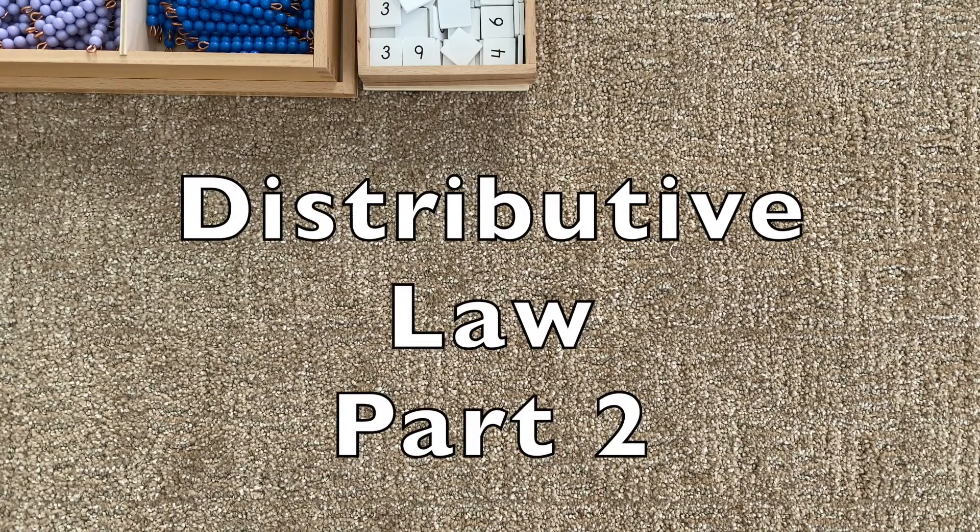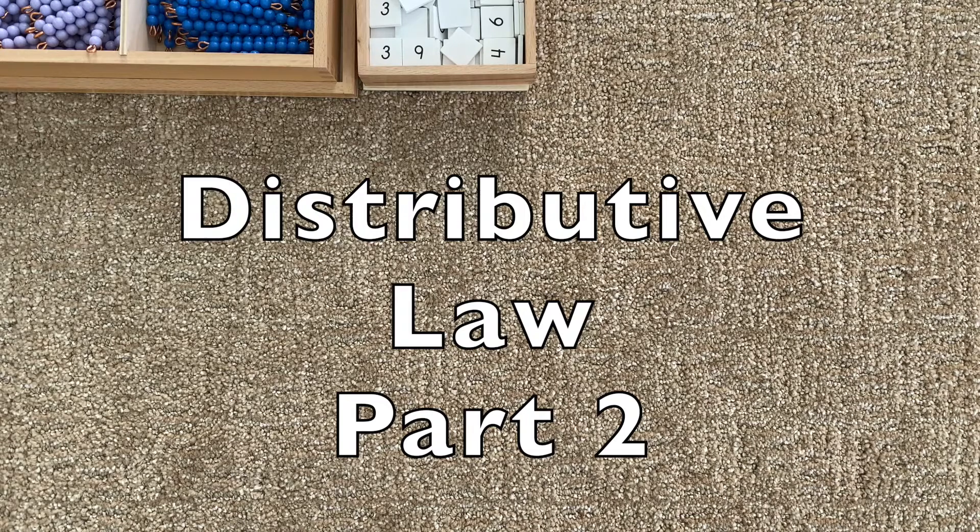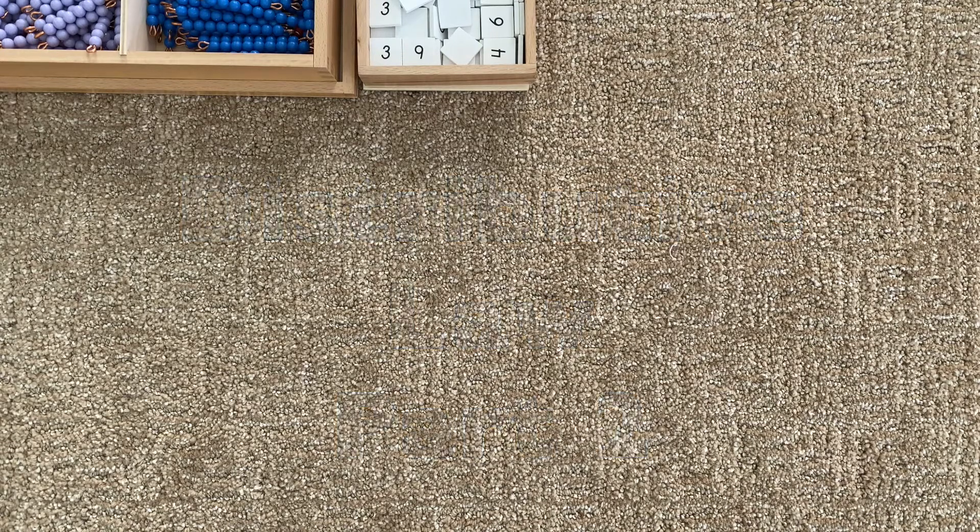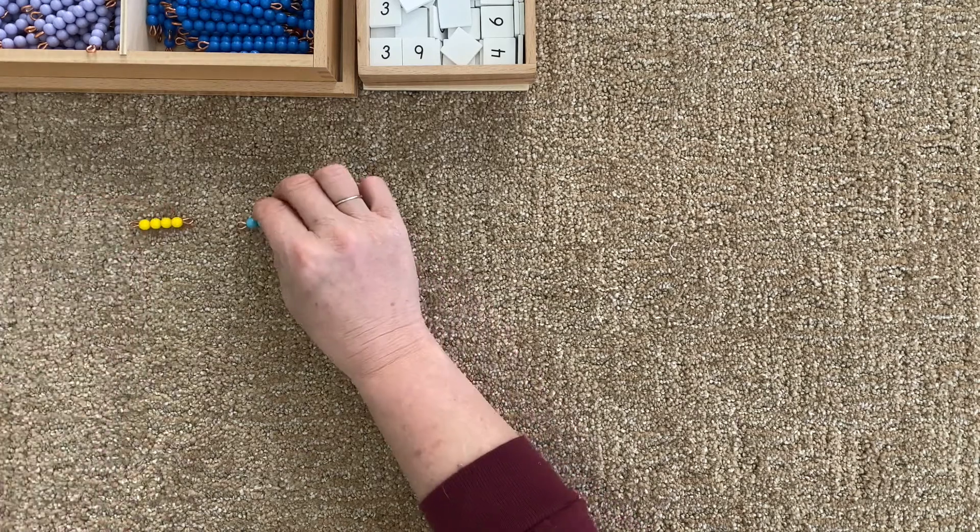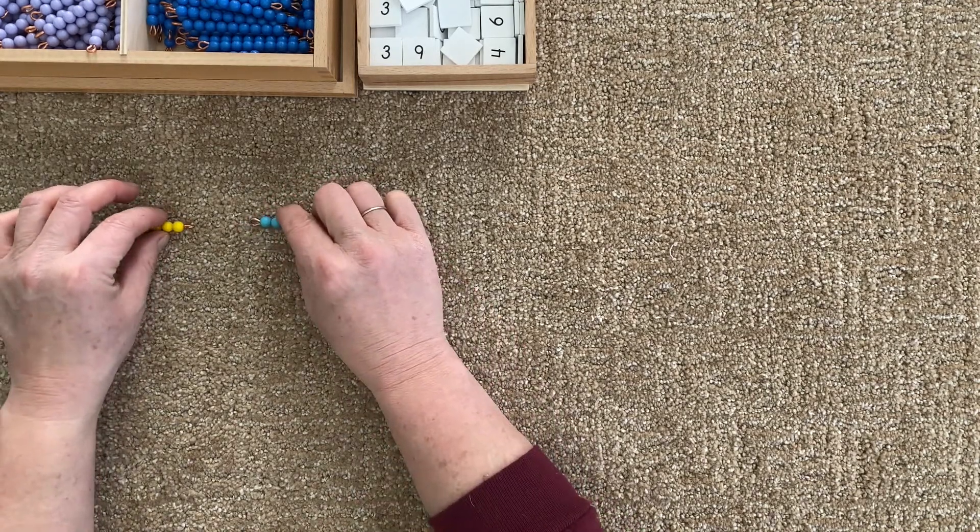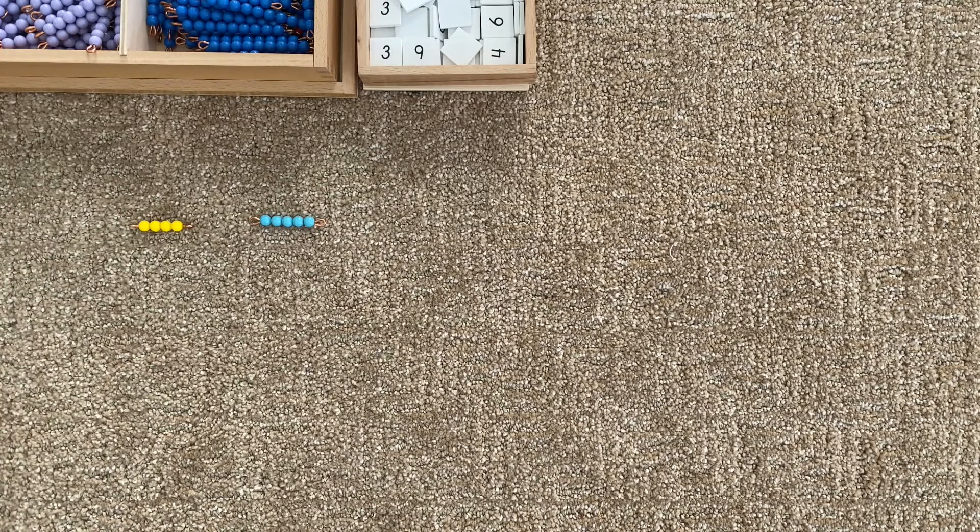Hello, Ekaterina here, and I'm going to show you some next steps of distributive law. This time we'll take two bead bars, four and a five. I'm going to say these two are a pair in my sum.